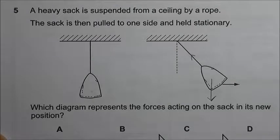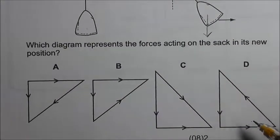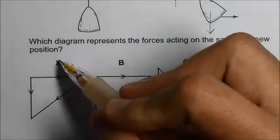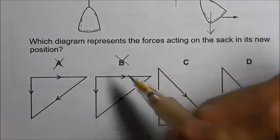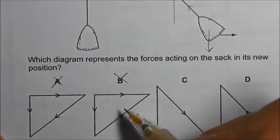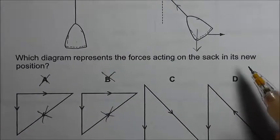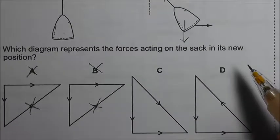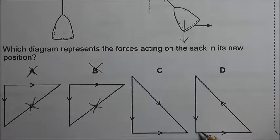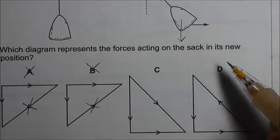Now let's look at the options given. A and B are out because the tension of the rope should be going in this direction, not this direction. So we have the answer as this is the weight, and then there is a horizontal force to the right, and we have the tension force that is going this way and it forms a closed triangle.